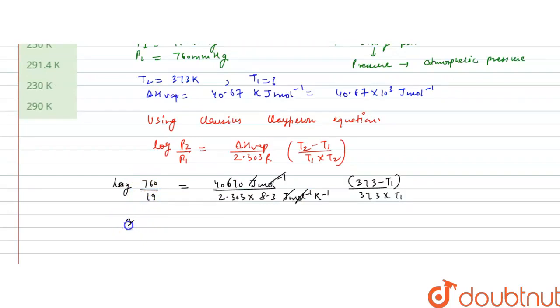So we will rearrange this equation as 373 minus T1 divided by 373 into T1 equals 2.303 into 8.3, this is in per Kelvin, divided by 40,670.